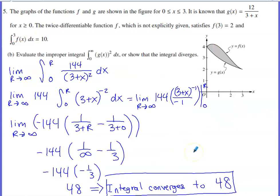Part B asks us to evaluate an improper integral from 0 to infinity of g of x squared. We want to find the value of that or show that it diverges. If you square g of x, squaring the numerator gives 144, squaring the denominator leaves 3 plus x quantity squared.